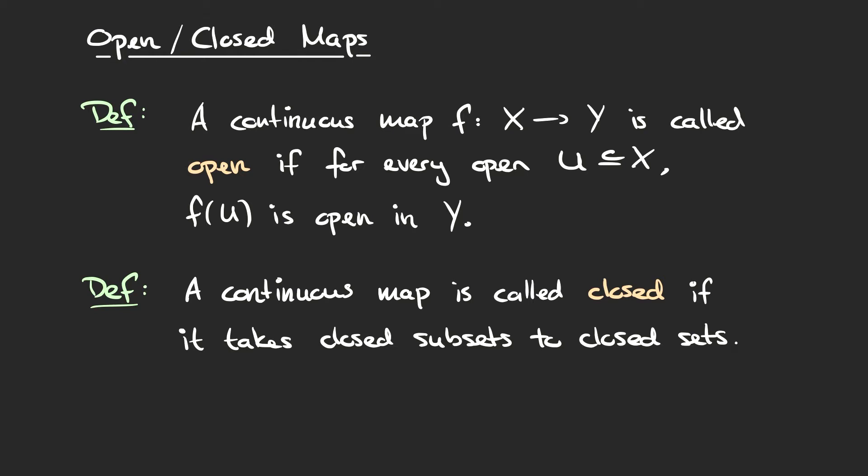You may remember from the video on continuous maps that it didn't matter if we used open sets or closed sets to define continuity — saying the pre-image of every open set is open is equivalent to saying the pre-image of every closed set is closed. This is because pre-images play nicely with complements, and closed sets are just the complements of open sets. However, in the case where we're looking at images of open sets and closed sets, we don't have this nice compatibility between the image under a function and taking complements. Therefore, these two definitions become distinct.